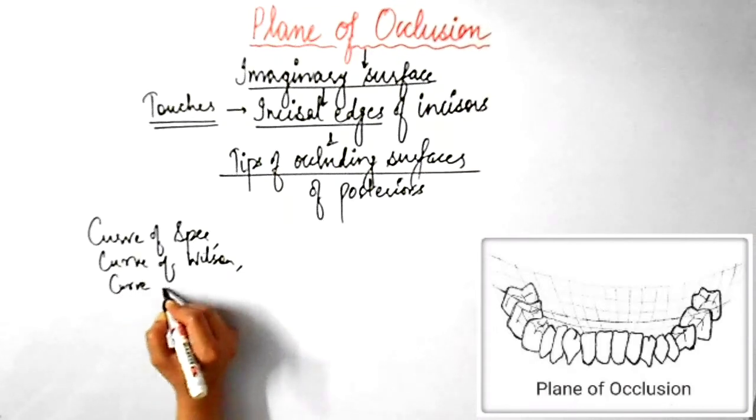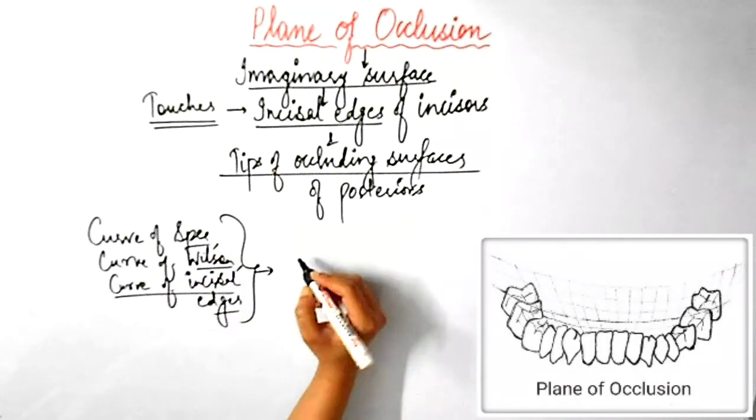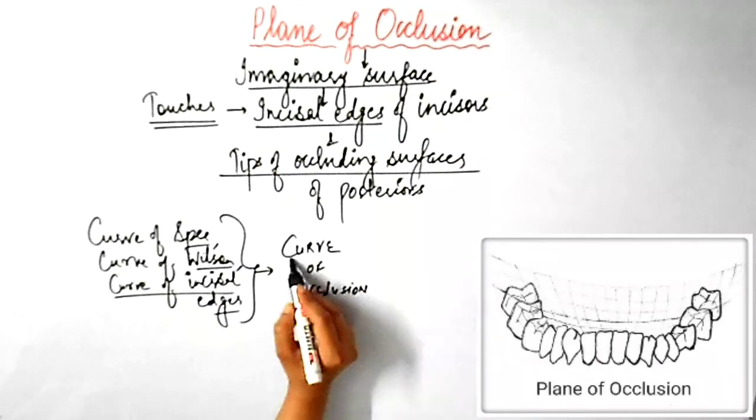So, together the curve of Spee, the curve of Wilson and the curve of incisal edges are referred to as the curve of occlusion.